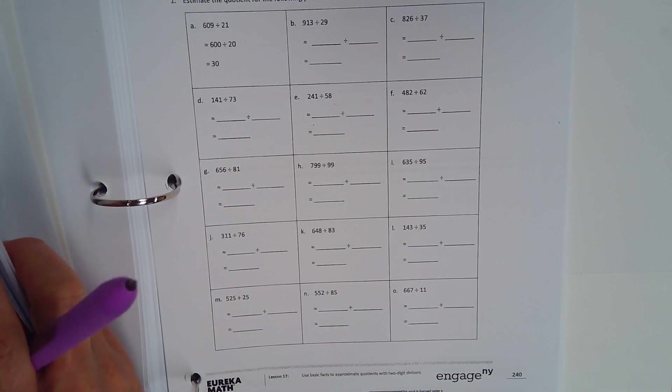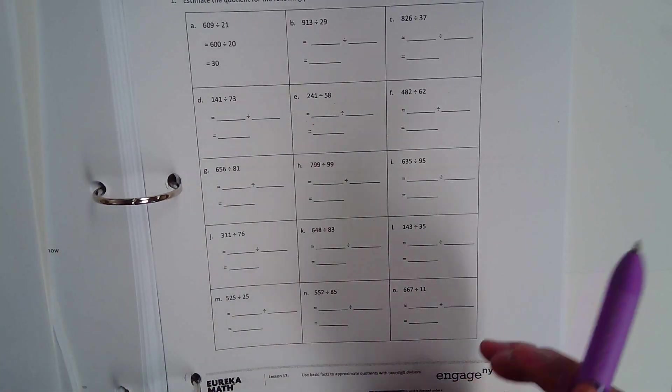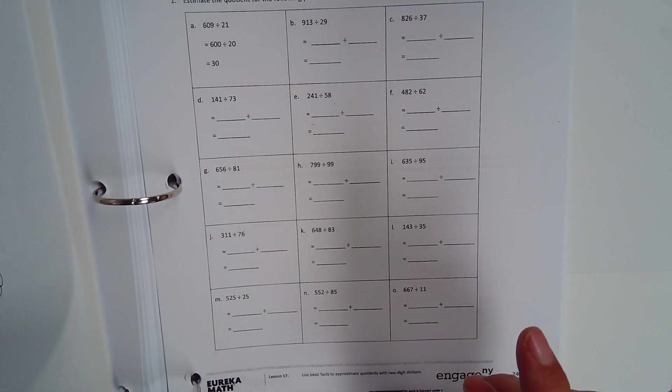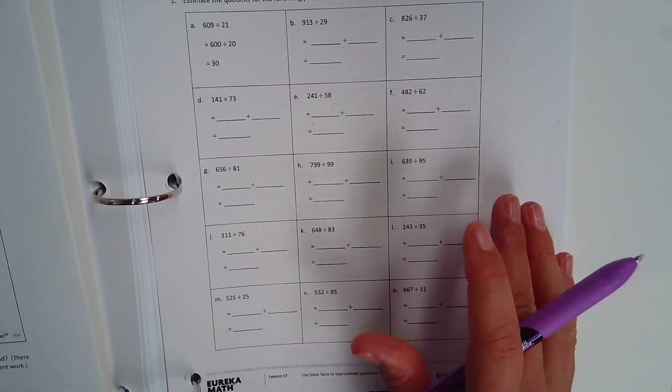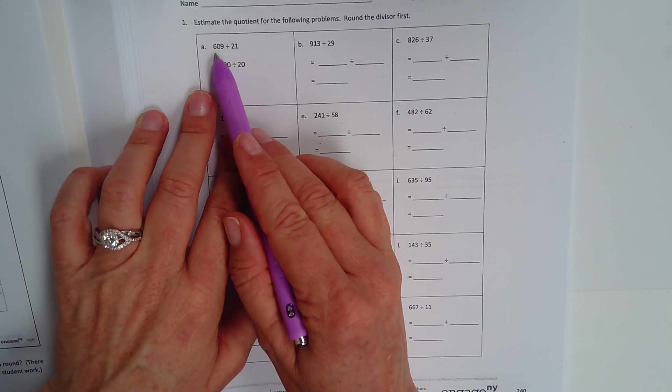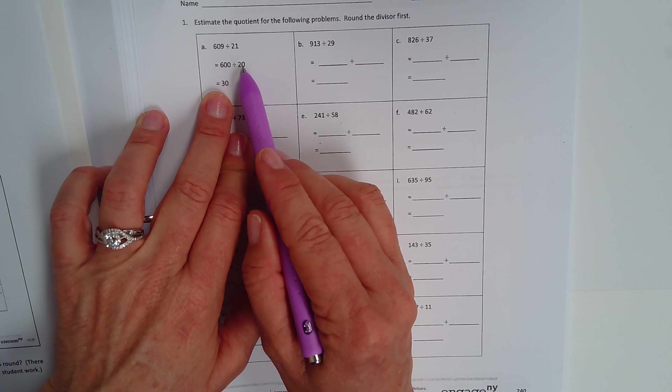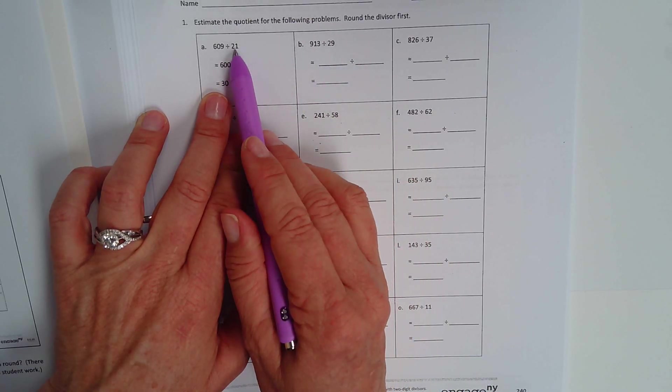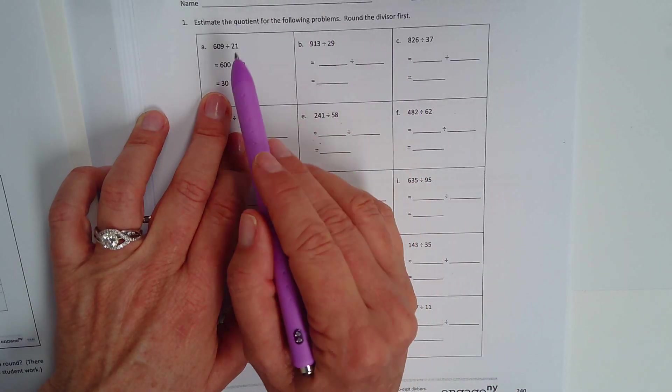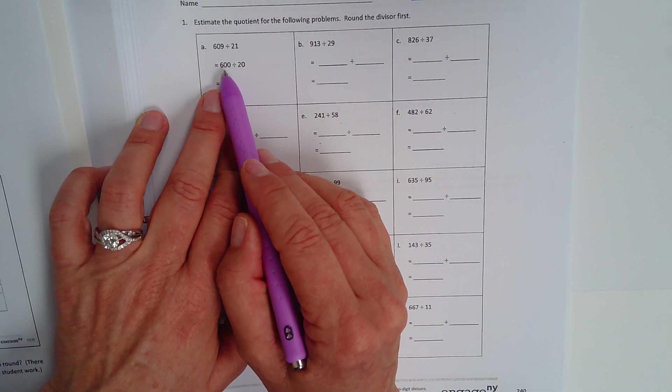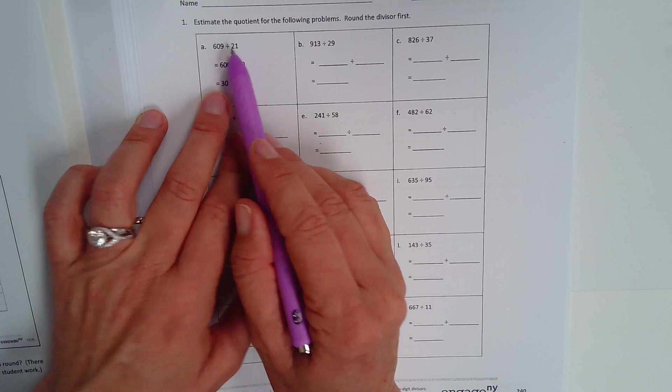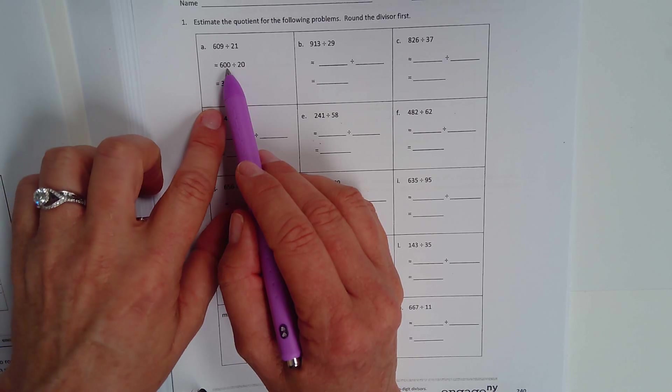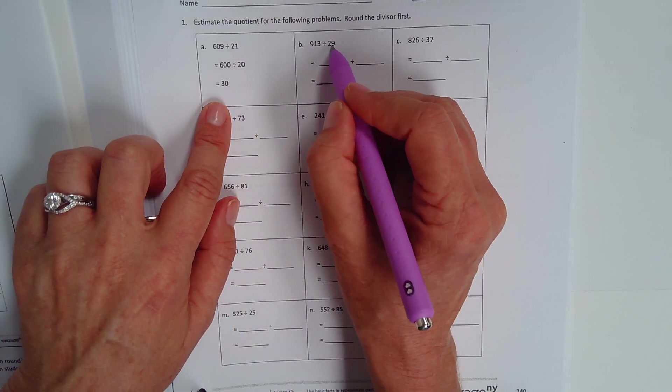And it says, estimate the quotient for the following problems. Round the divisor first. So we have 609 divided by 21. So they said to round the divisor first. So I'd round 21 to 20. Now I'm going to think of a multiple of 10. So what would be really easy to divide 20 into? It would be 600. Now let's go over here.